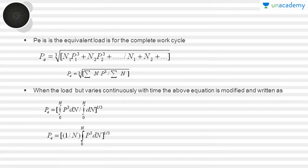The equivalent load for a complete work cycle, when the bearing is under cyclic loads and speeds in specified intervals where the radial load and corresponding speed are constant, is given by PE equals the cube root of (N1·P1³ + N2·P2³ + ... ) divided by the sum of all N values. Simplified, this is PE equals the cube root of (sigma N·P³) divided by sigma N. This relation is used when the load and speed are constant within each specified interval.